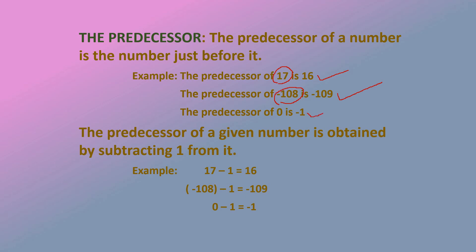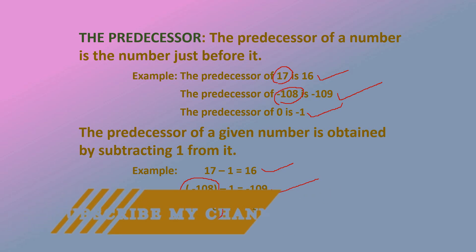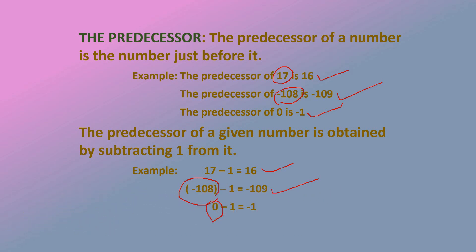How do we get these predecessors? You already know that when you add 1 to the given number, you get the successor. But when you subtract 1 from the given number, you get the predecessor. So 16 is the predecessor of 17 because 17 – 1 = 16. Similarly, –108 – 1 = –109, so –109 is the predecessor of –108. And 0 – 1 = –1, so –1 is the predecessor of 0.